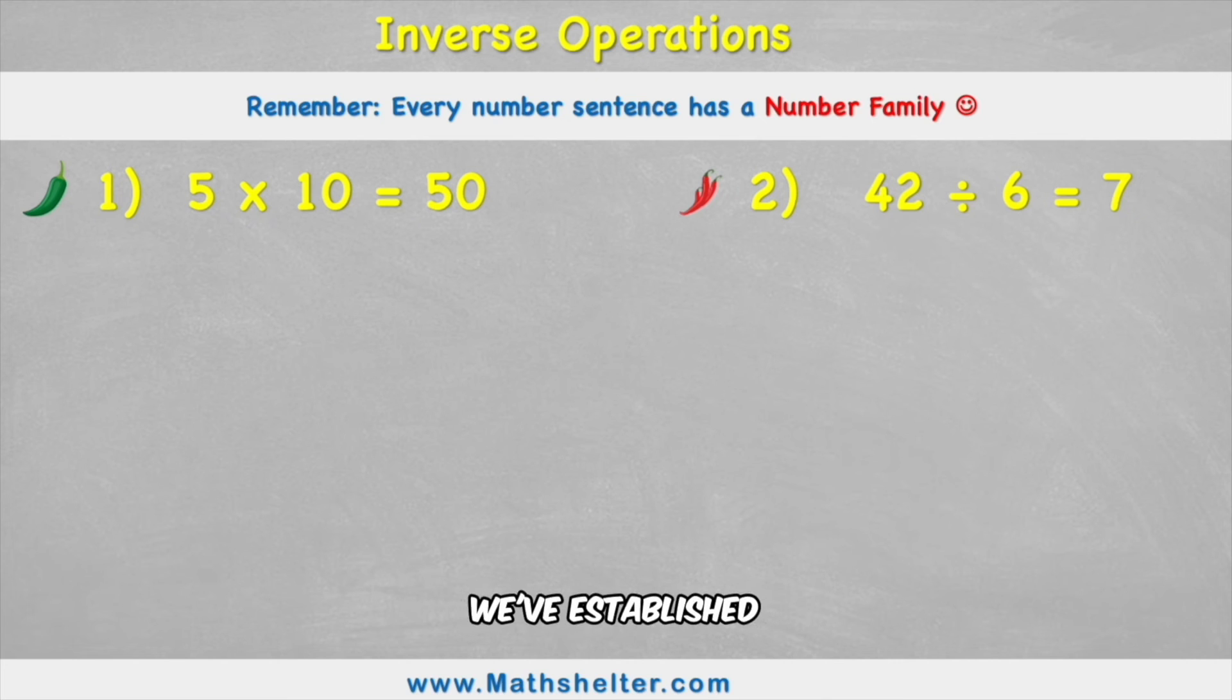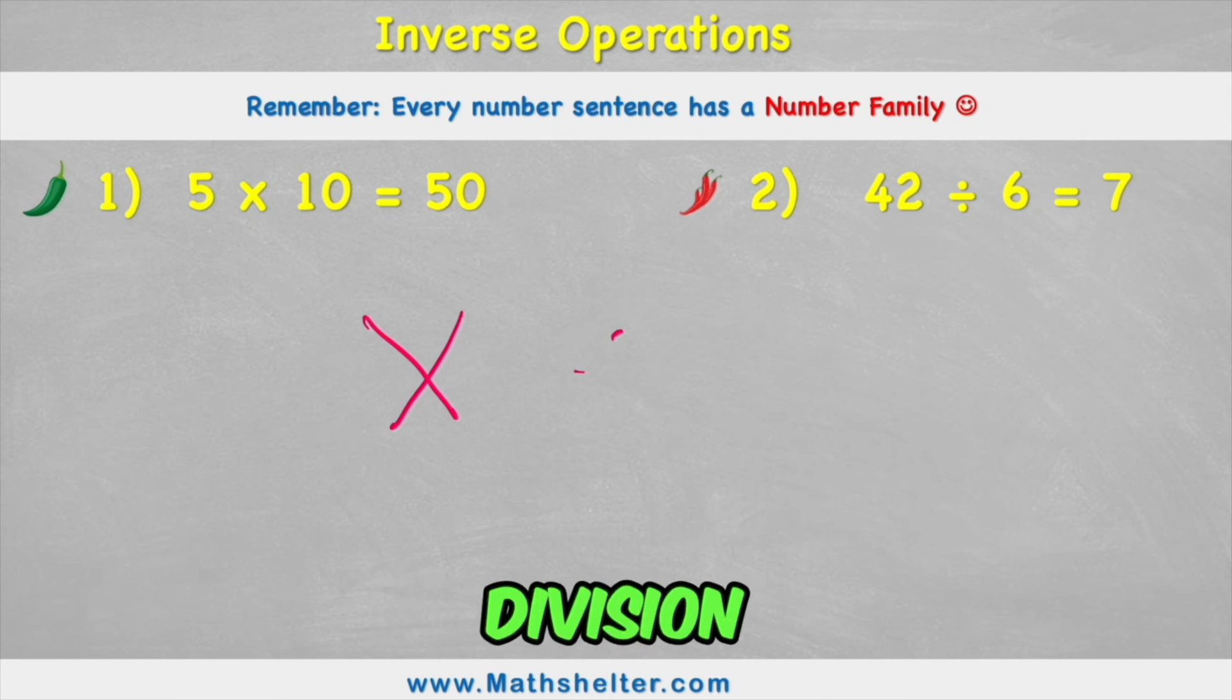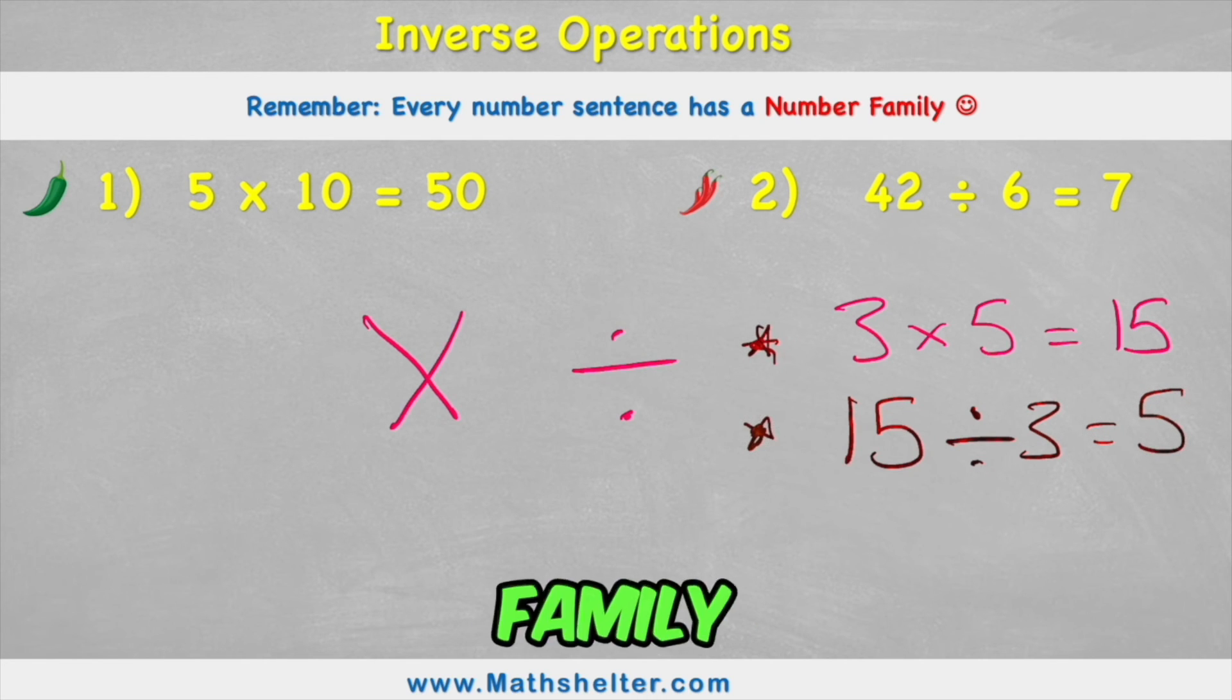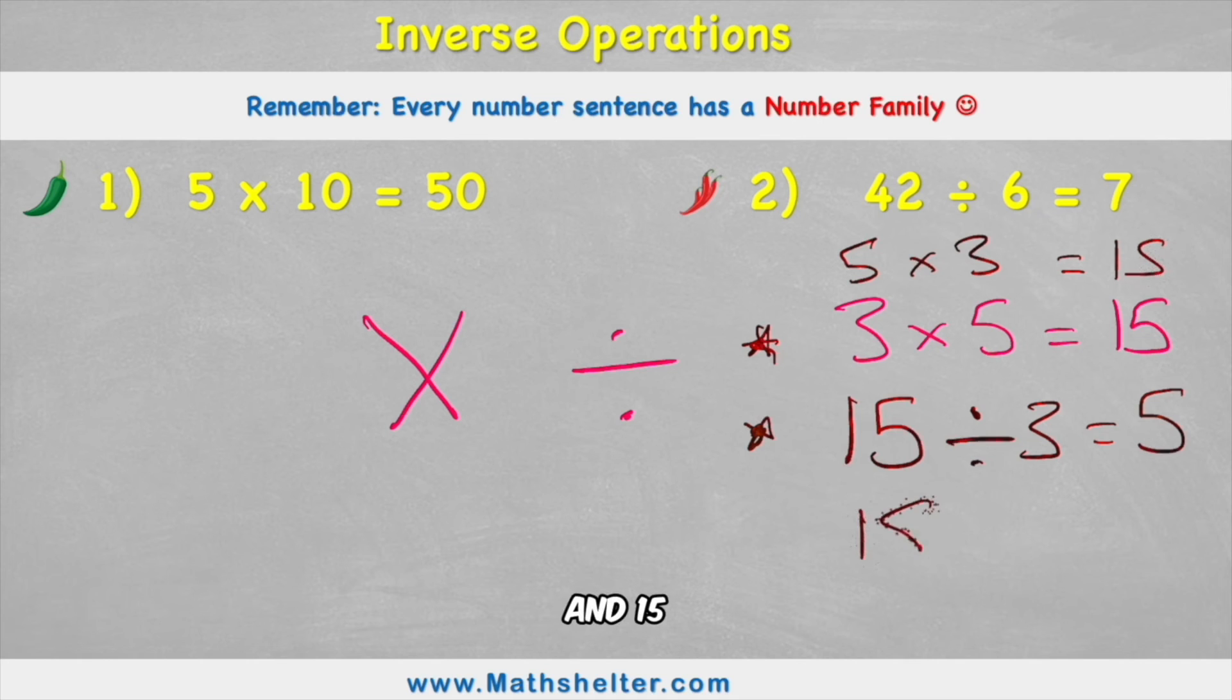So let's summarize. We've established that multiplication and division are opposites. So if I have a question like 3 times 5 equals 15, the opposite and the inverse would mean putting my 15 to the start of my question and dividing it. 15 divided by 3 equals 5. And both of these questions are part of a larger number family where we would also have 5 times 3 equals 15 and 15 divided by 5 equals 3.